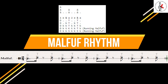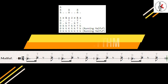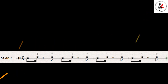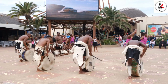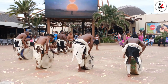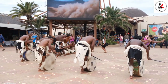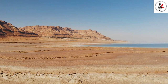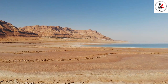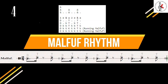Malfoof is characterized by a rapid and lively tempo, creating an energetic and infectious rhythm. It follows a simple 2/4 time signature, where each measure is divided into two equal beats. Malfoof is frequently used in traditional folk dances and celebrations throughout the Middle East. Let me show you how to play the rhythm.